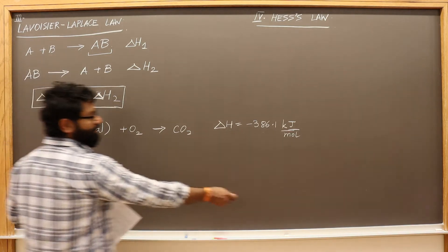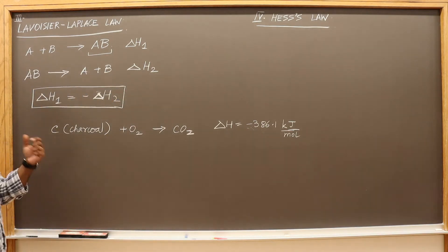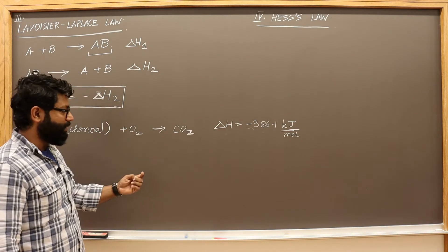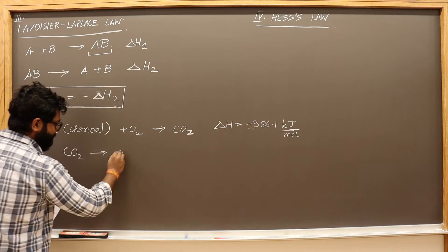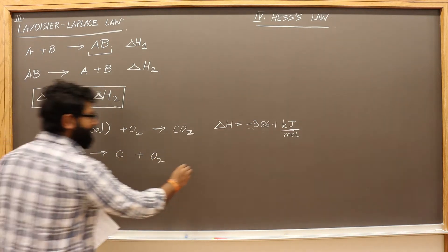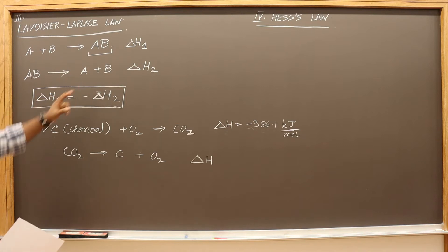You found out that burning charcoal in oxygen gives CO2 and the delta H of the reaction is this. This was an exothermic reaction because it is releasing heat, the delta H is negative. You wanted to find out what is the amount of heat that will be required to break CO2 into charcoal. This is an easier reaction to measure than this. This was an easier reaction to study and find out the enthalpy change but this was not.